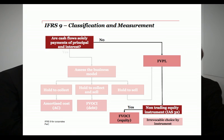Today we're going to focus on the second test, which looks at what kind of cash flows the asset has. Under IFRS 9, financial assets can only be measured at amortized cost or fair value through other comprehensive income if their cash flows are solely payments of principal and interest. This is commonly referred to as the SPPI test. The objective of this test is to ensure that only plain vanilla basic lending arrangements can be measured at amortized cost.